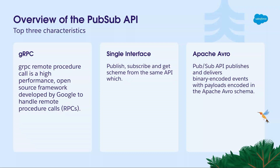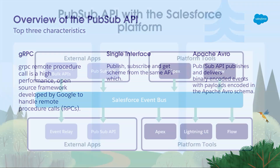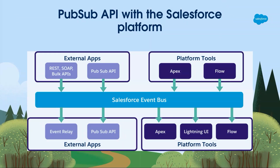Apache Avro format makes it quicker and easier to serialize and deserialize, making your API much quicker, meaning applications built with the PubSub API are much more scalable and reliable. That's a quick overview of the PubSub API — many of you in the audience probably already use it and we're here to find out more about managed subscriptions.